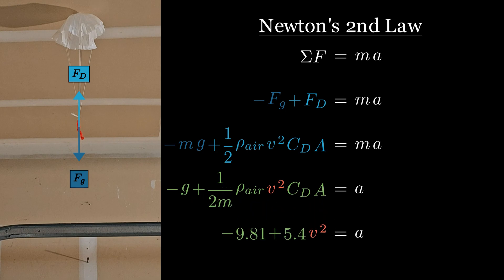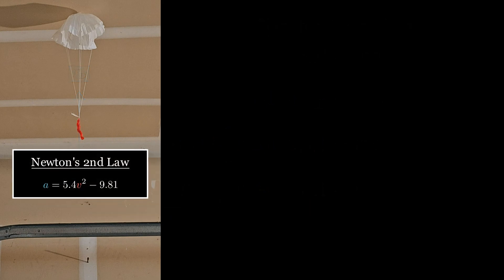Plugging in those values and now we've got a simplified equation that relates the velocity of the parachute man at any point in time to his acceleration. We still don't know the values of either of these at all points in time, but rather than panic, let's just take it one step at a time and solve this numerically.